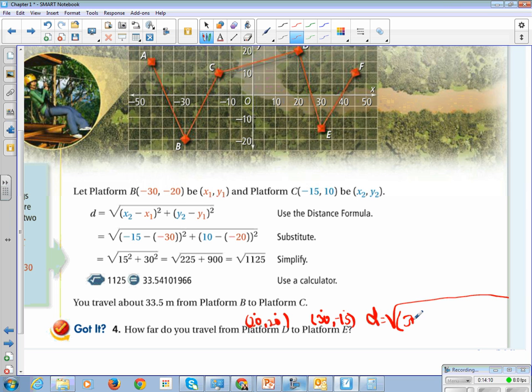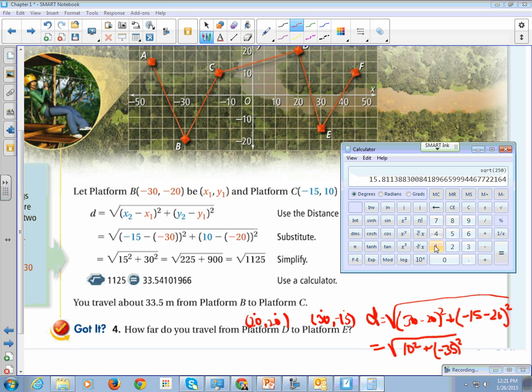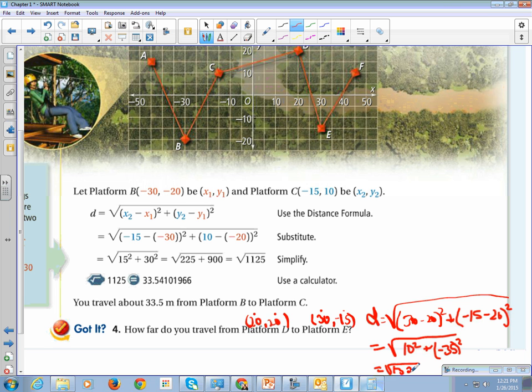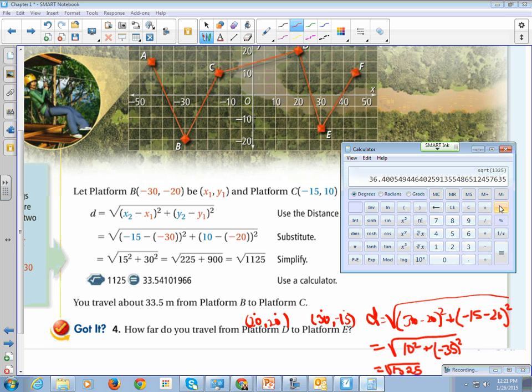So we've got 30 minus 20 squared. I'm just going to change to a pen. 10 plus negative 15 minus 20 squared. 30 minus 20 squared is 10 squared. Negative 15 minus 20 is negative 35 squared. So let's plug my calculator. I know 10 squared is 100. And the square root of that loop is 36.4.